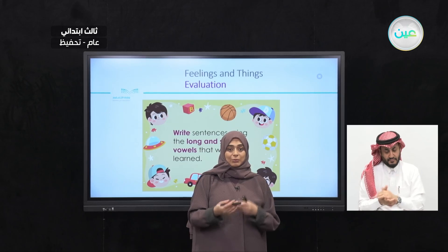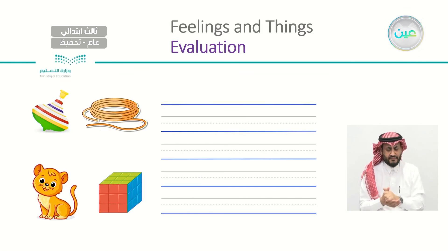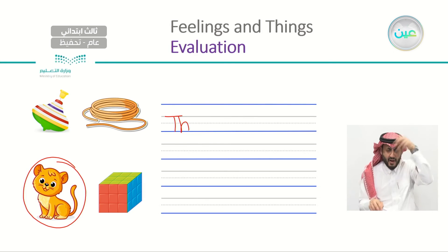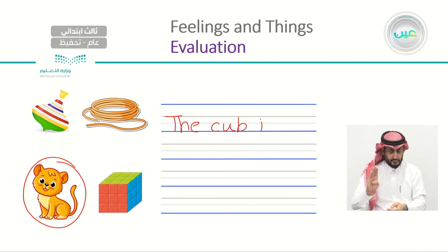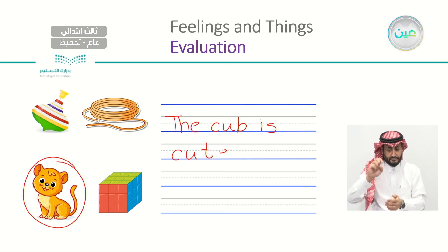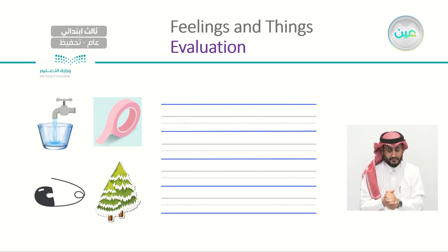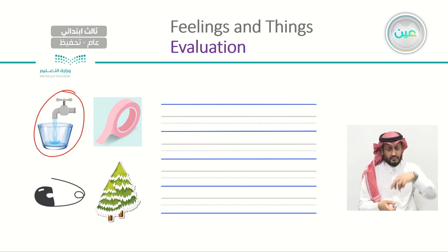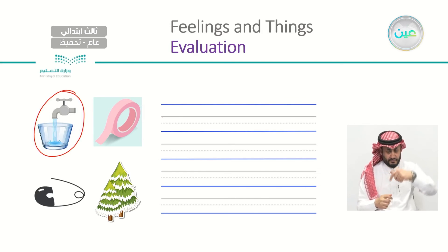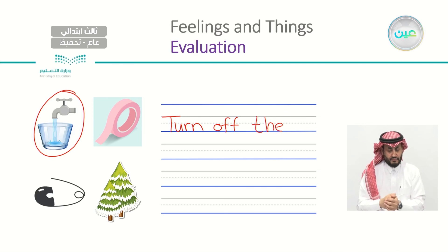Now we're going to remember the long and short vowels and write sentences. We can say: 'The cub is cute' — using a long U and a short U. Here we have another word — is it a tap or a tape? Tap. Let's write: 'Turn off the tap, please.' The A in tap is short.